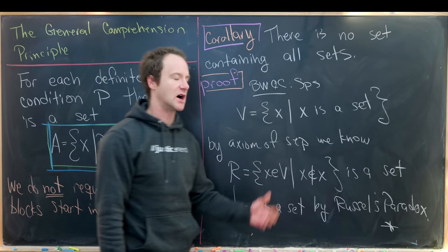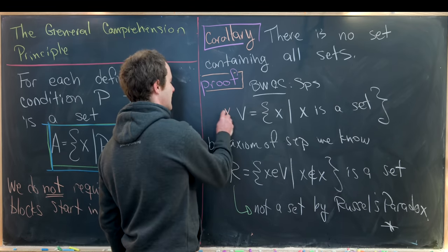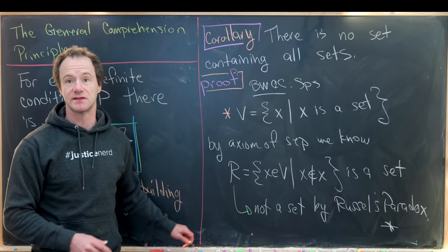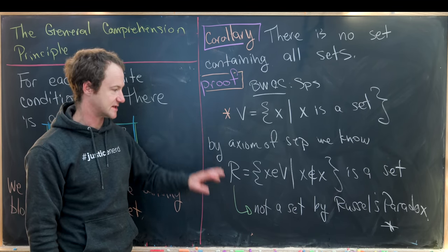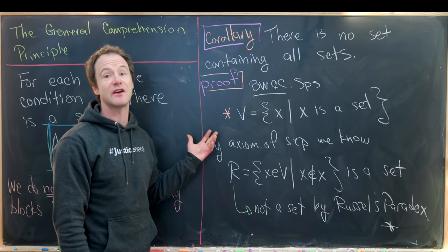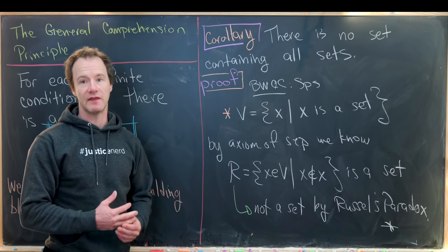So what must we have contradicted? Well, we contradicted the existence of this set of all sets. So if the assumption of the existence of a set containing all sets leads to a contradiction, then there in fact must be no set containing all sets. And that's a good place to stop.